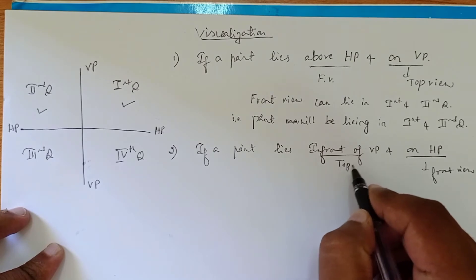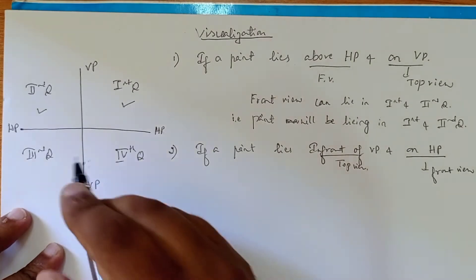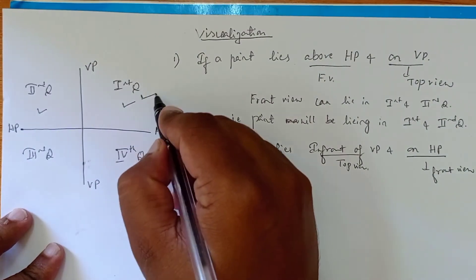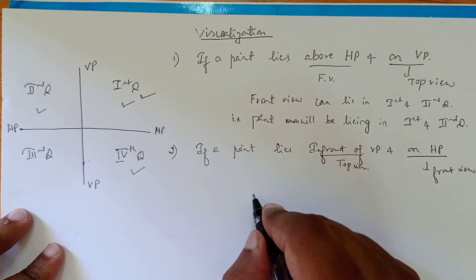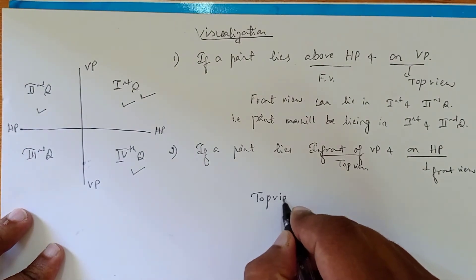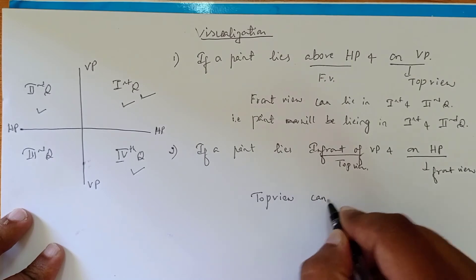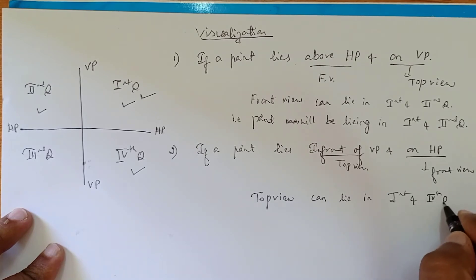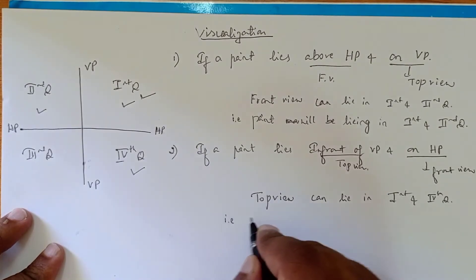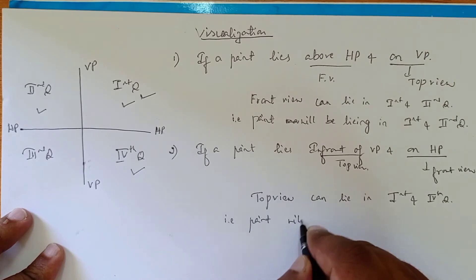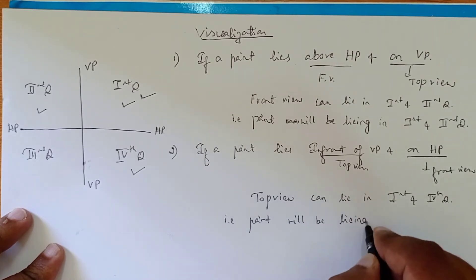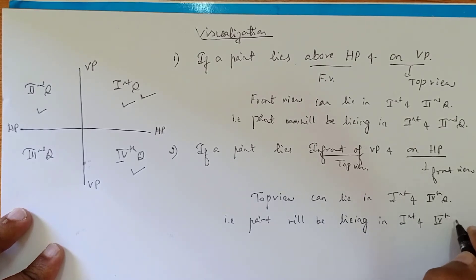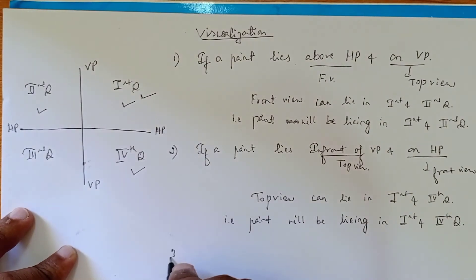In front of VP means it is the top view. This is our vertical plane. In front of VP means there are two chances — the top view can lie in the first and fourth quadrant. So the point will be lying in the first and fourth quadrant.